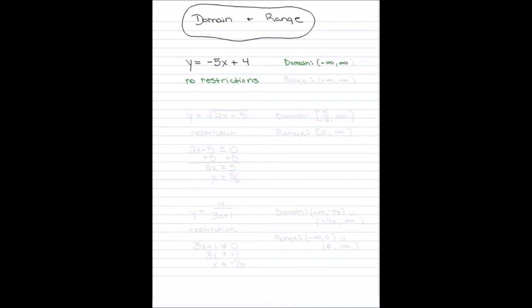So your domain is going to be negative infinity to infinity — this is all real numbers. You can plug in negatives, positives, fractions, decimals, it doesn't matter. And same thing with the range. Range is the Y values, and depending on what X value you plug in, you can get any Y value on the number line. So your range is negative infinity to infinity.